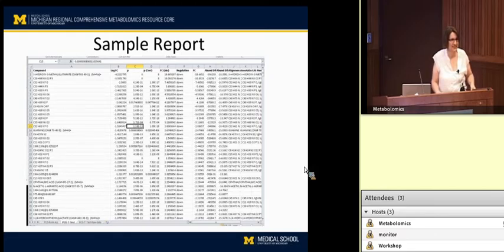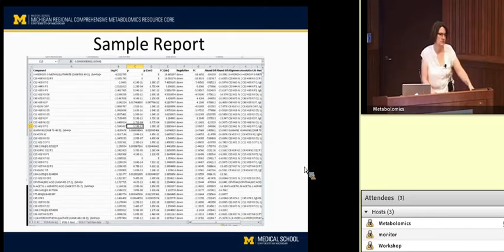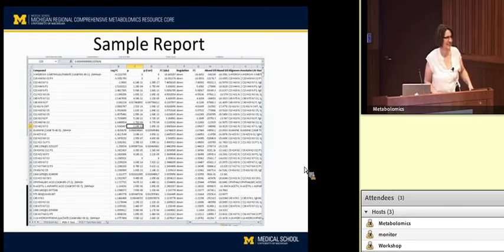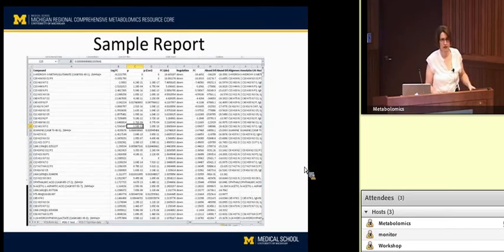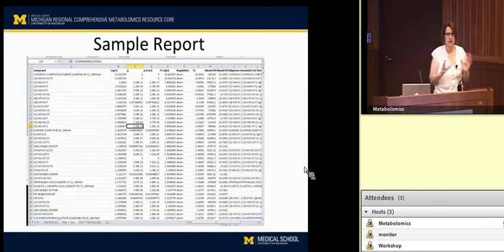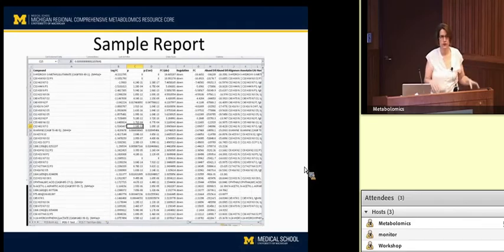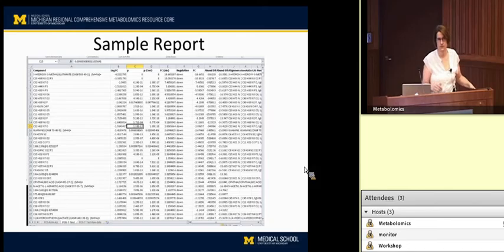Follow-up question: Do you have any effort like a tissue atlas of metabolites — for example, in pancreas we should see these metabolites, and in plasma these metabolites? Answer: Those kinds of efforts exist in the literature. That was actually a topic of discussion at ASMS this year — one of the goals of the community at large is to start mapping which features, even if they're unknowns, are seen in which types of tissues, to have a broader sense of what's normal for a tissue even if it's unknown.